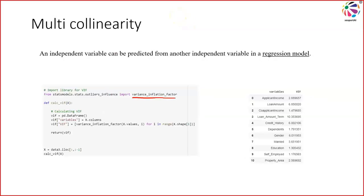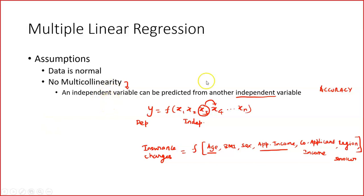Multicollinearity is a very important factor, and as indicated, we use the statsmodels library to easily identify the variance inflation factor. This is a very important consideration in regression — not just for multiple linear regression, but also applicable for logistic regression. That means there should not be a relationship between independent variables; I should not be able to predict one independent variable based on another. Remember, we use the term 'independent' because each variable should independently influence the dependent variable, not together.